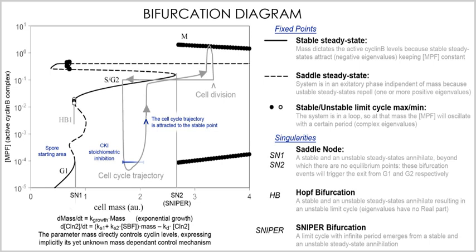Computational neuroscience, also known as theoretical neuroscience or mathematical neuroscience, is the theoretical study of the nervous system.